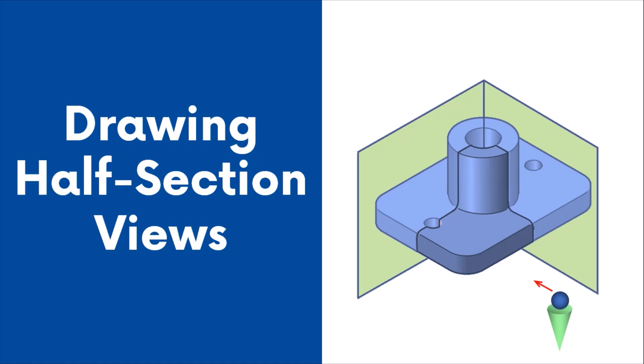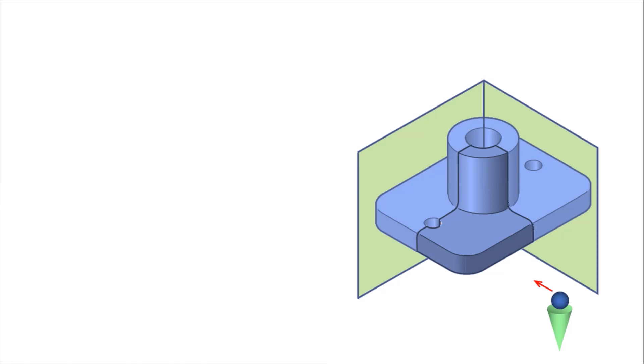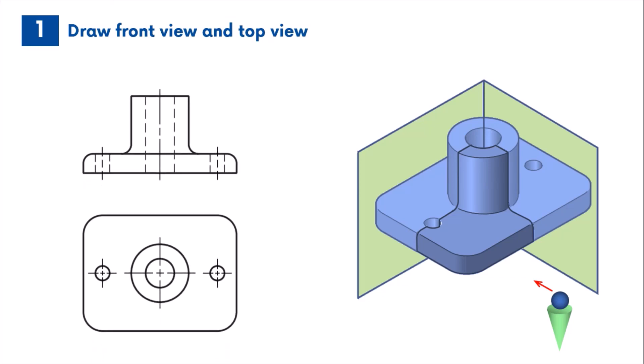Our task is to draw the half-section front view and the top view. Here are the main steps for making a half-section view. The first step is to draw the front view and the top view of the part.